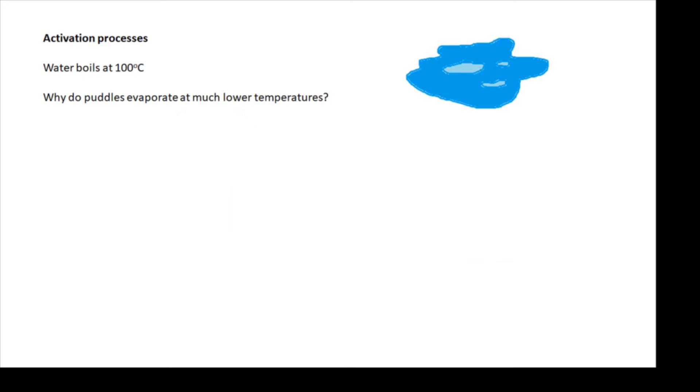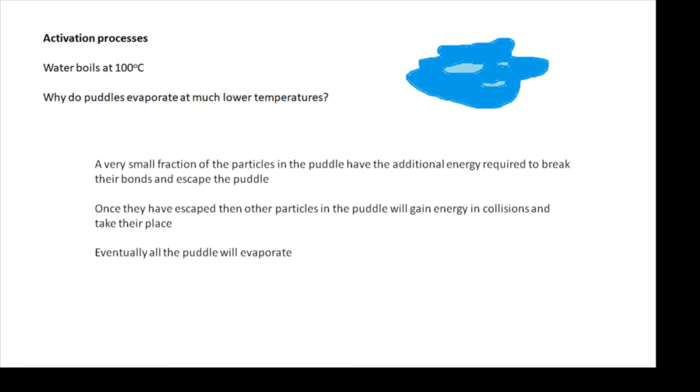A very good example is water evaporating. Water boils at 100 degrees centigrade, but puddles evaporate at much, much lower temperatures. Why is this? Before we get mathematical about it, basically what's happening is that there is a distribution of energies, and a very small fraction of the particles in the puddle have enough energy to escape. They have the additional energy required to break their bonds and to escape from the liquid and to become a vapor.